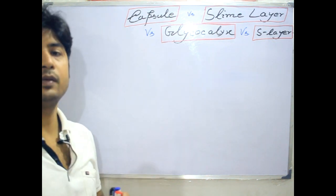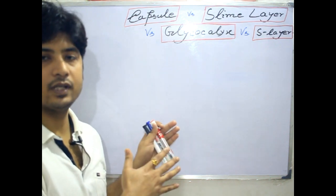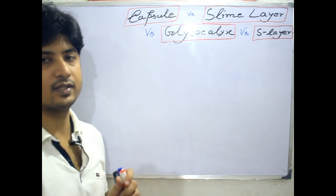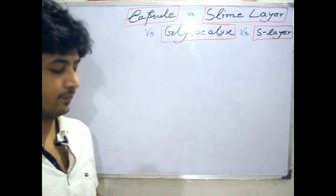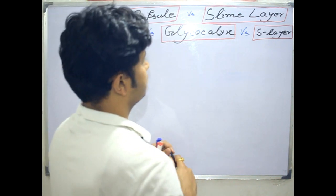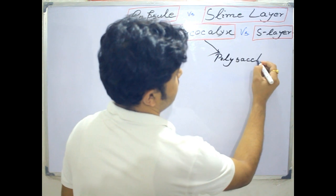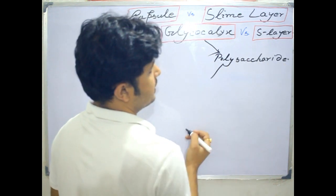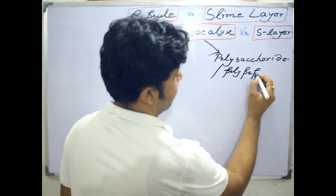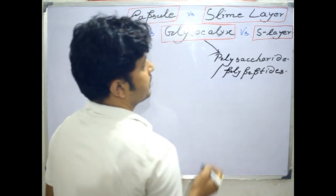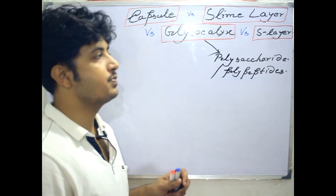Capsule and slime layer are both present outside the bacterial cell wall. Before going to those terms, I'll say something about glycocalyx. If you understand glycocalyx it will be easier for you to remember the capsule as well as the slime layer. Glycocalyx is a polysaccharide structure, or sometimes it may be made up of polypeptides — so glycocalyx is made up of polysaccharides or polypeptides.